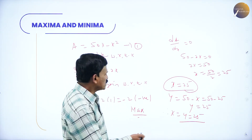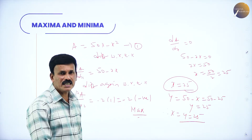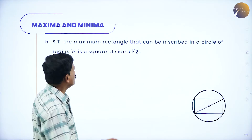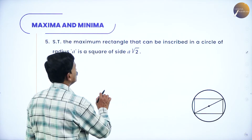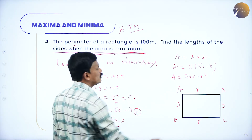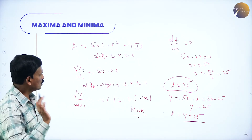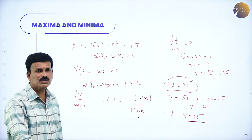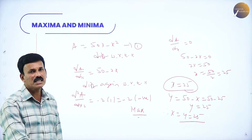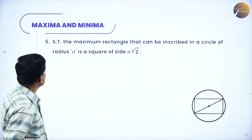Since all sides are equal, x equals y equals 25, the rectangle is a square. If the rectangle is a square, you will get maximum area. Therefore the rectangle with maximum area that has a perimeter of 100 meters is a square of side 25 meters.